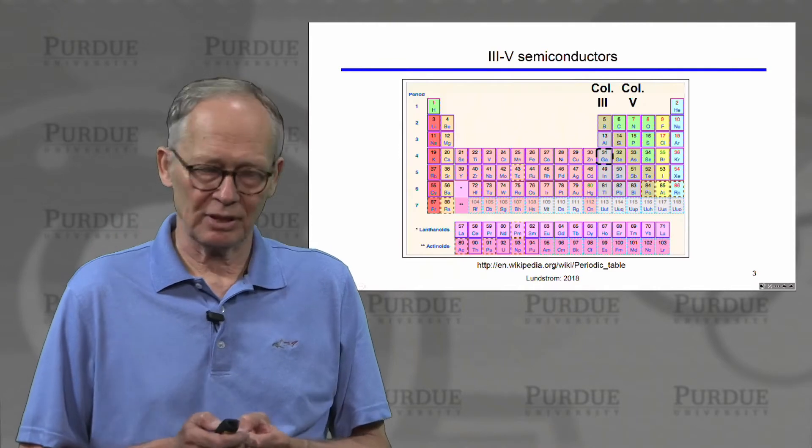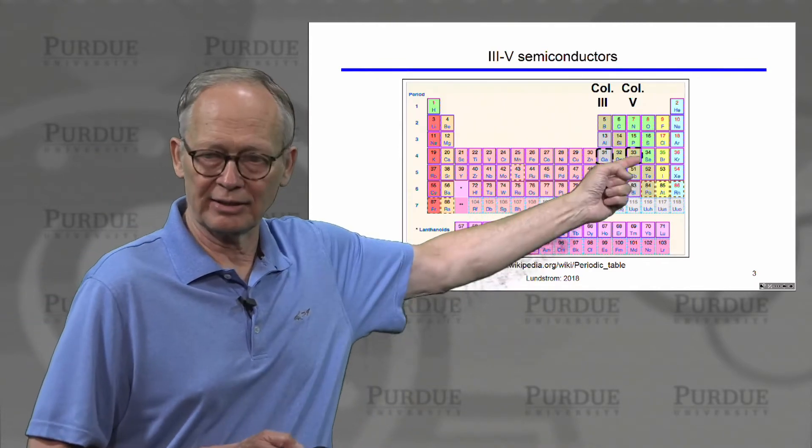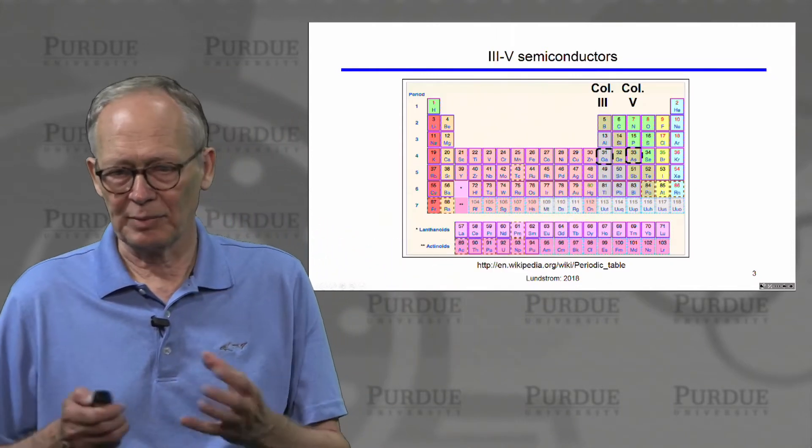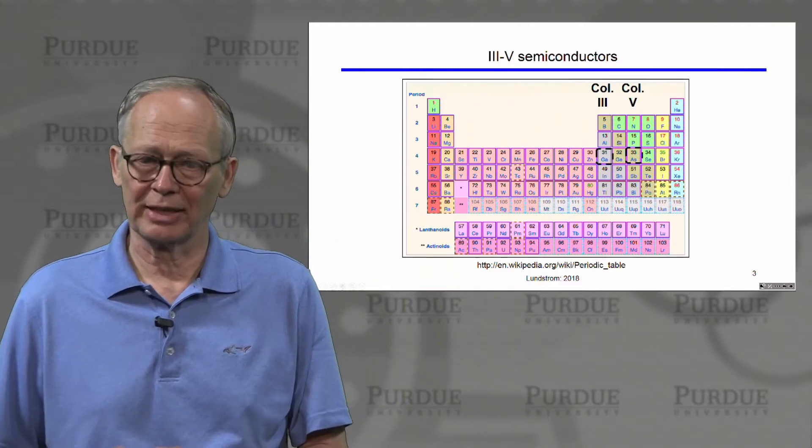So one particularly important example is gallium from column three and arsenic from column five. If we make a compound gallium arsenide, that is also a very commonly used semiconductor.